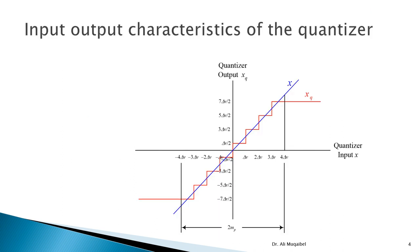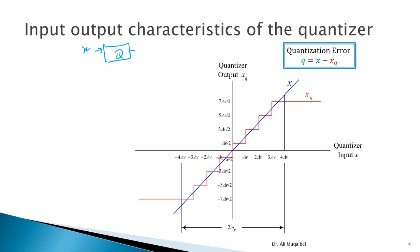The following diagram shows the input-output characteristics of the quantizer. On one axis we have the input x, and on the other axis we have the quantized output x-sub-q. The input goes into the quantizer and the output is x-sub-q. The error is defined as the difference between x, the true original signal, and x-sub-q. If the relation between them were a straight line, every input value would map perfectly to the output.